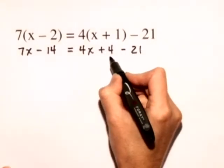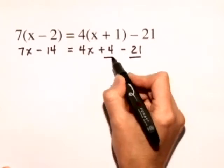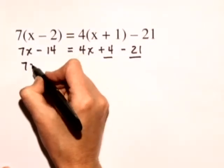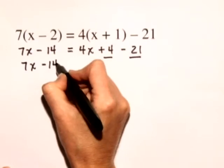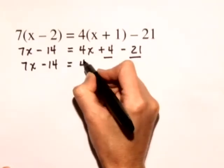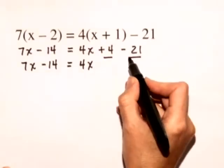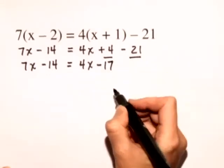Now we'll go ahead and on the right hand side combine the like terms of those two constants. We have 7x minus 14 is equal to 4x plus 4 minus 21 gives us minus 17.